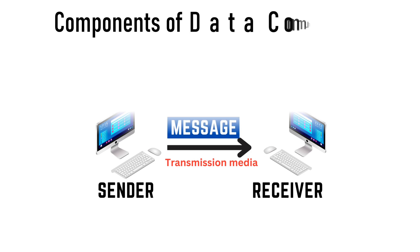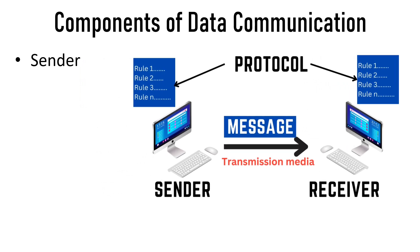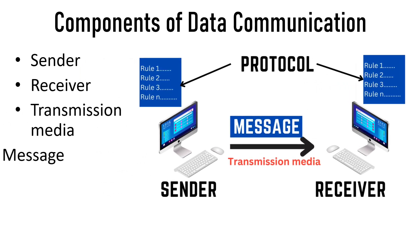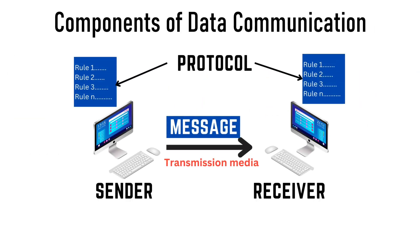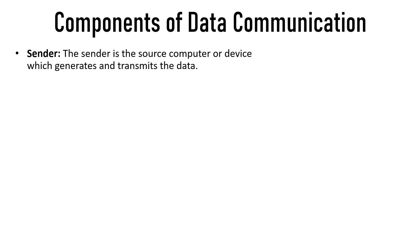Now let me tell you about the components of data communication. There are total five components of data communication and they are the sender, receiver, transmission media, message, and protocol. The first component is the sender, which is the source computer or device that generates and transmits the data.